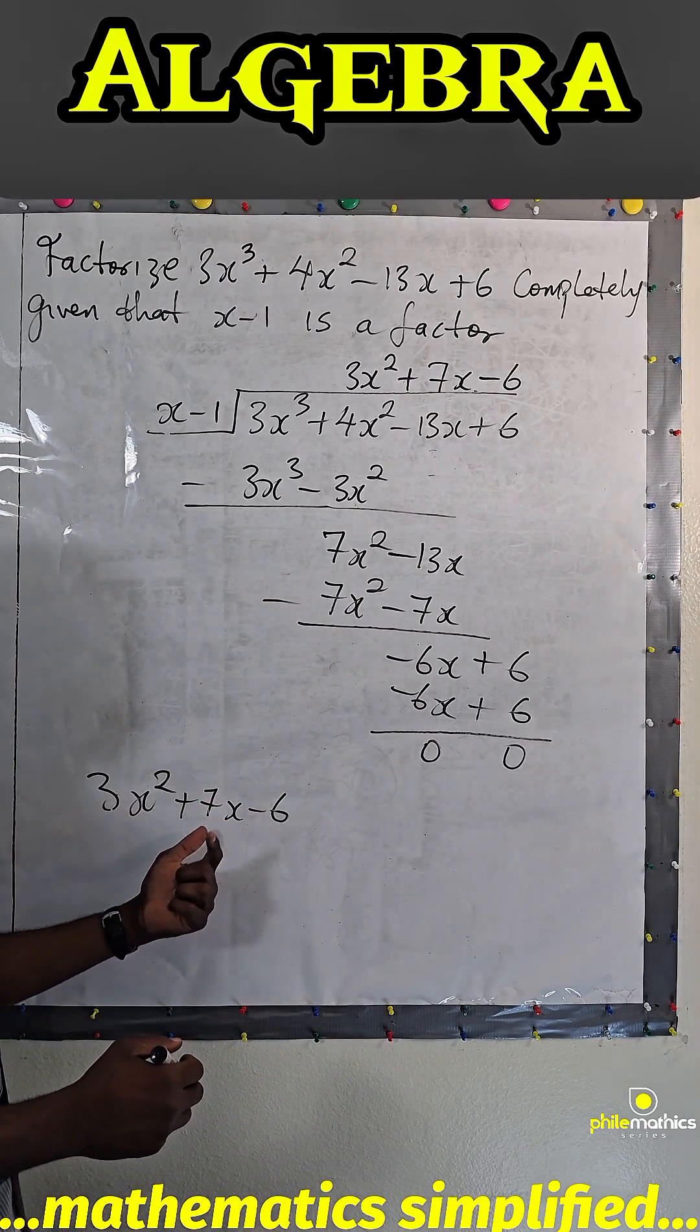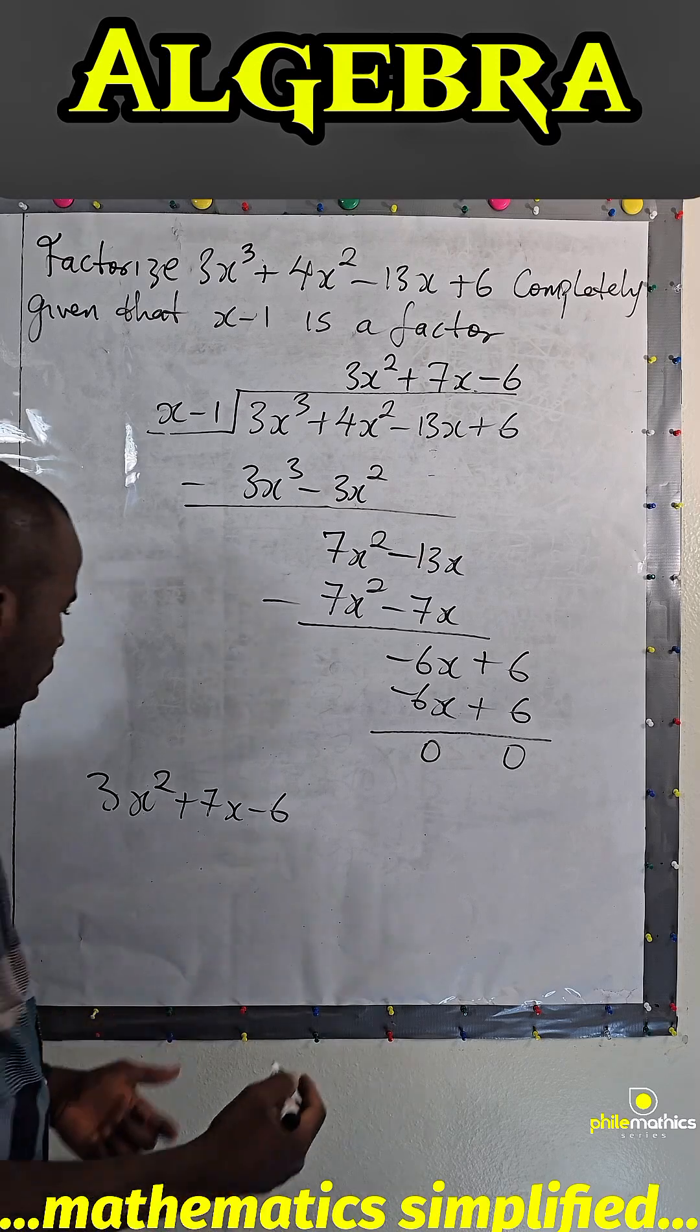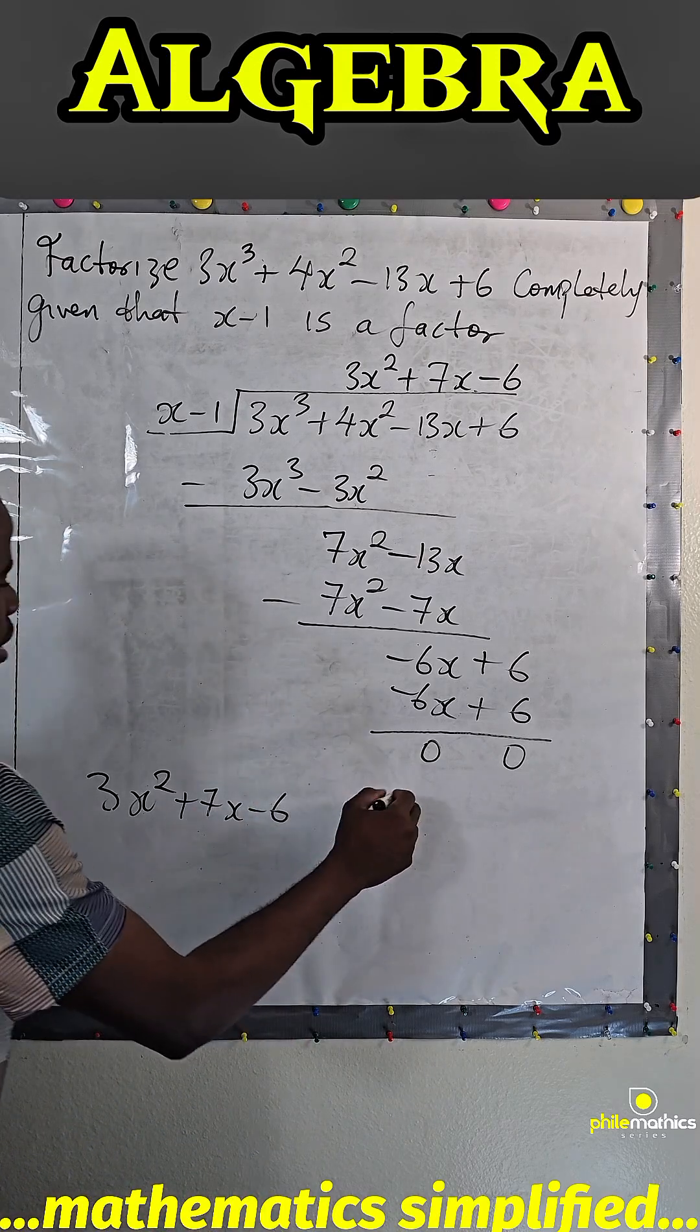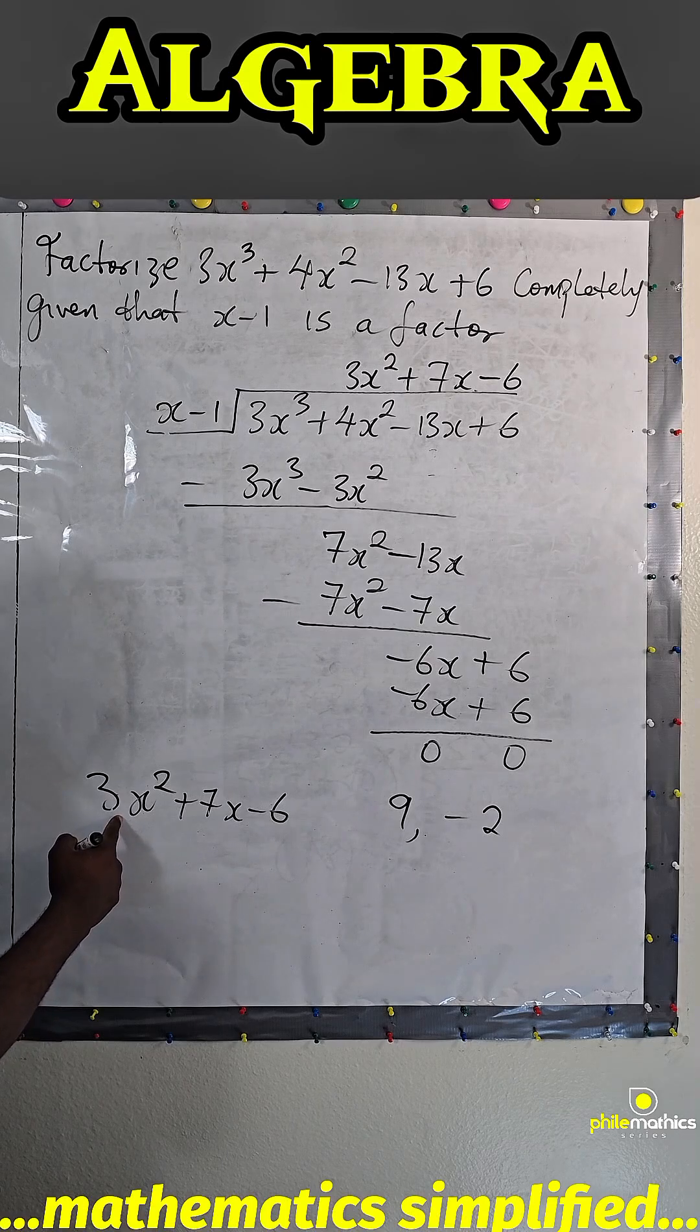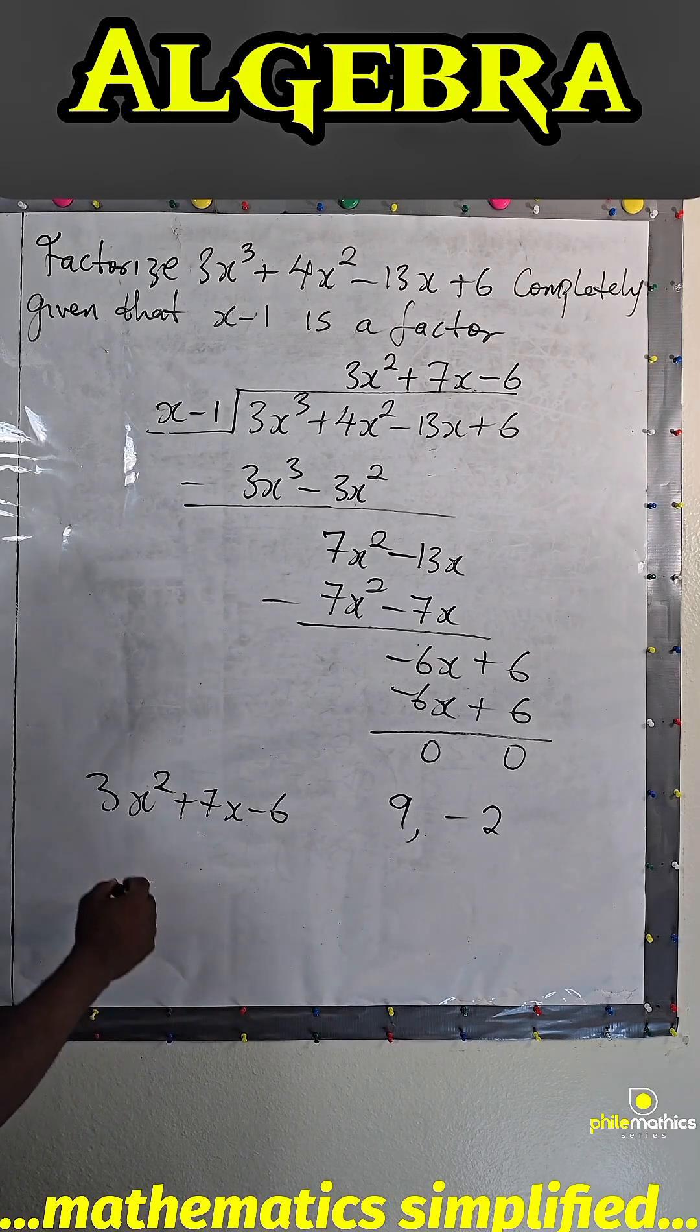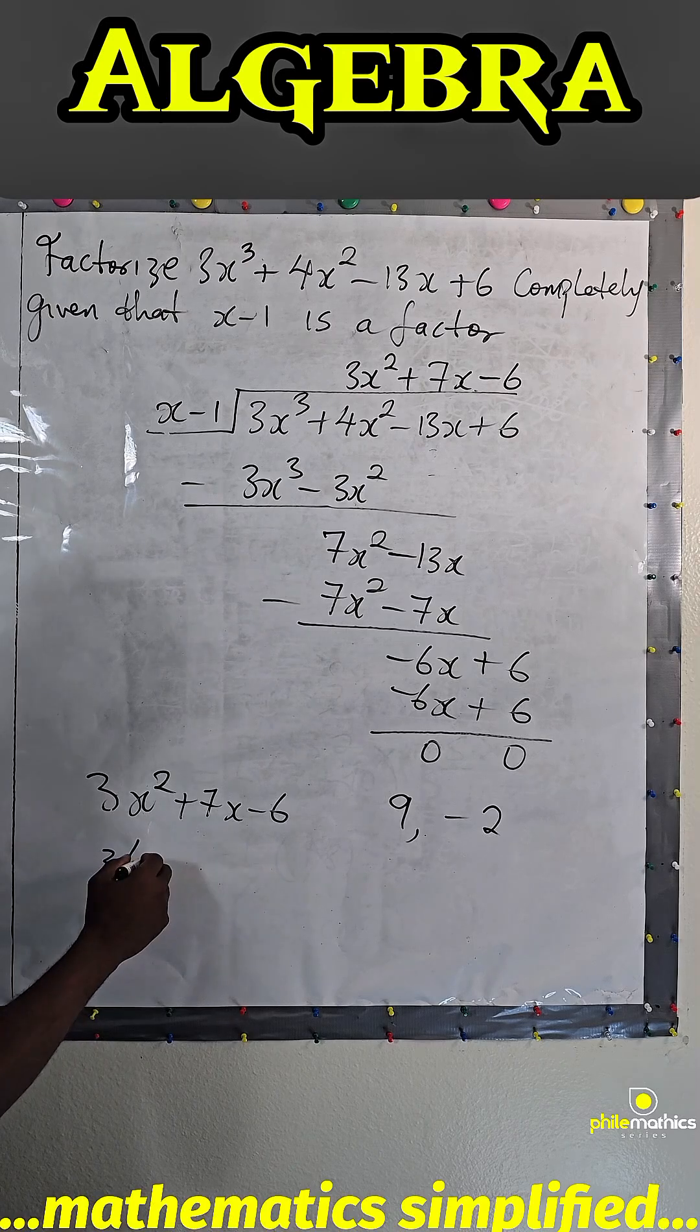There's a shortcut to doing that. Since there are 9 and minus 2, if I factorize 3 out of this I will have 3 brackets. We put the normal factor x plus 9 over 3 since I factorize 3 out, and x minus 2 over 3.